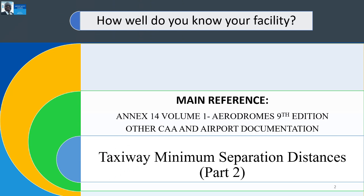How well do you know your airport facility? We are still treating various physical characteristics of the airport facility. Our main reference is the Annex 14 Volume 1, Aerodromes, 9th edition and other CAA and airport documentation. Currently, we are learning about taxiway minimum separation distances.